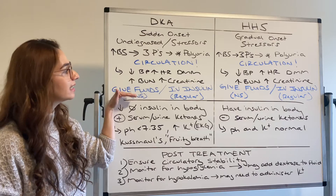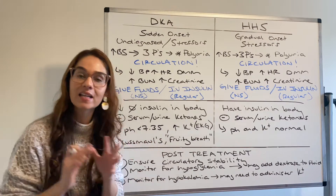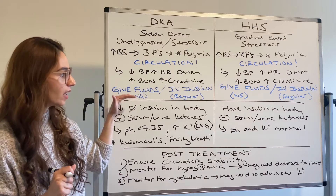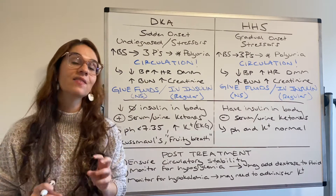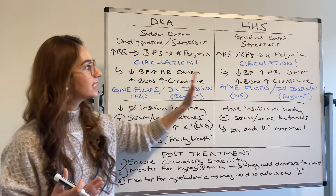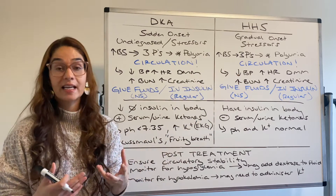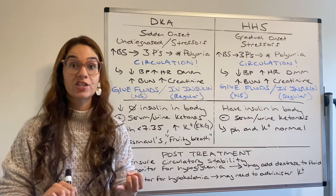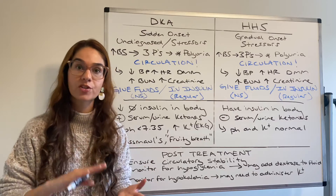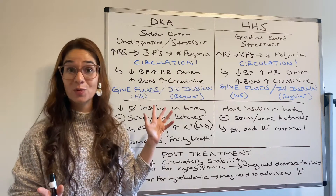Your priority if it's a circulatory problem is to replace volume — we are going to give fluids. Traditionally it's going to be normal saline, though depending on how their electrolytes look it can be normal saline with something in it. We are giving IV insulin, and the IV insulin available is regular insulin. Do you see how they are the same at this point? Now let's differentiate — because that case study could have your patient's blood sugar at 220, with low blood pressure, high heart rate, dry mucous membranes, elevated BUN and creatinine. At this point we really can't tell the difference between the two.